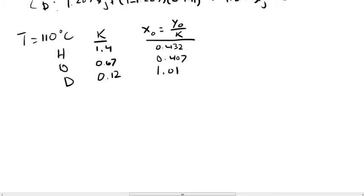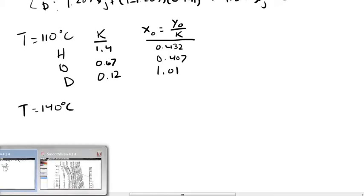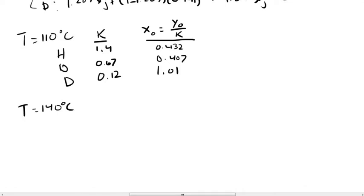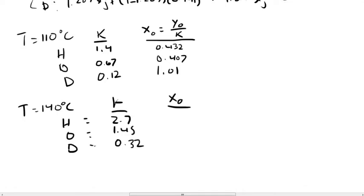Going back to the DePriester chart at 140°C, we find: K_heptane ≈ 2.7, K_octane ≈ 1.45, K_decane ≈ 0.32. Our x values are then 0.224, 0.188, and 0.378. Summing these gives about 0.79, which is just short of 1.0. So the true temperature is somewhere between 110°C and 140°C. I'll guess about 130°C.